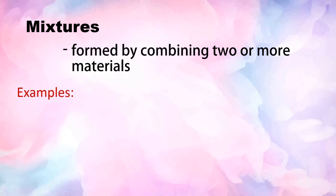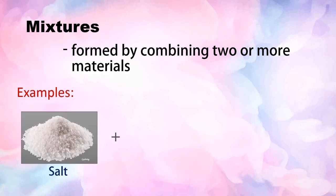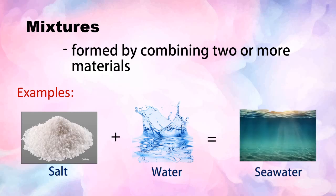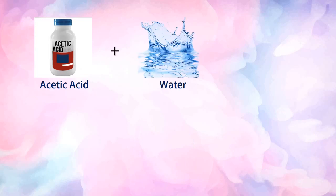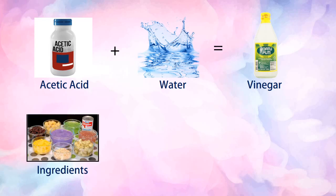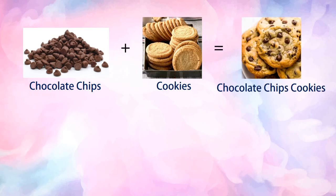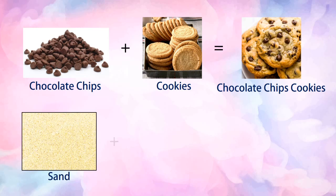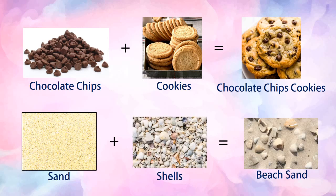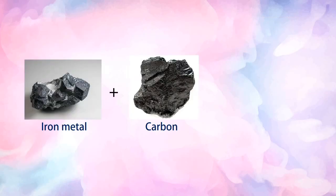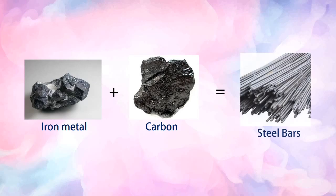Mixtures are formed by combining two or more materials. Here are examples of mixtures: number one, salt and water are the compositions of sea water; number two, acetic acid mixed with water produces vinegar; number three, ingredients such as sago, nata de coco, sweet beans, sweet ube, jelly, plan, ice cream, and milk are blended with crushed ice to make halo-halo; number four, chocolate chips added in cookies produces chocolate chip cookies; number five, sand and seashells are the components of beach sand.